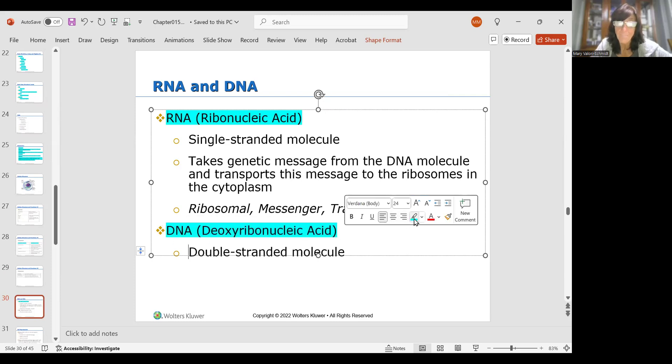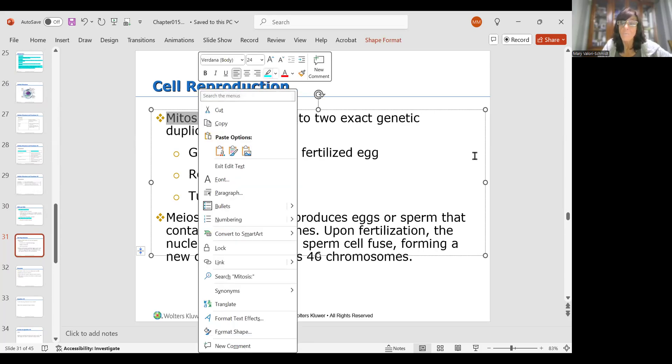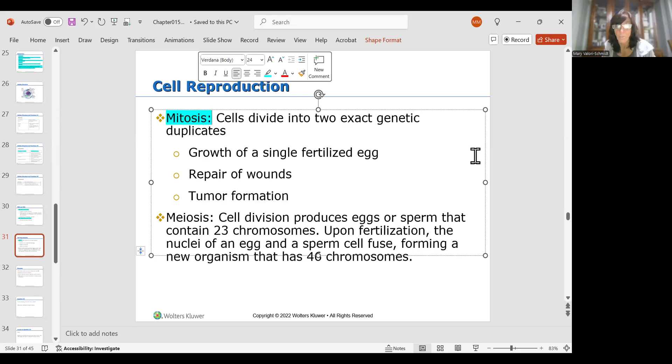You do need to know the difference between mitosis and meiosis. So mitosis is when cells divide into two exact genetic duplicates. Think about an egg. So when mommy and daddy love each other very much and you get pregnant, the sperm and the egg meet, boom, and now it's conception, it's a fertilized egg. Well that egg has to start to divide to get to turn into a zygote and then a fetus and a baby. So mitosis is the process of cells dividing into two exact genetic duplicates. Make sure you know that.